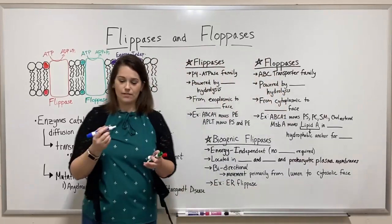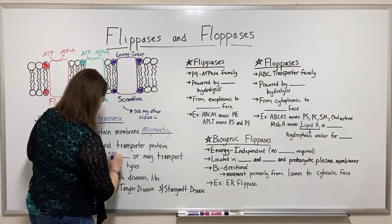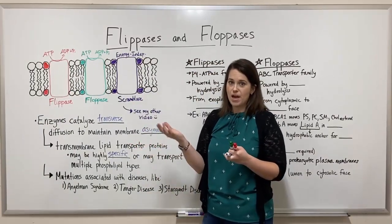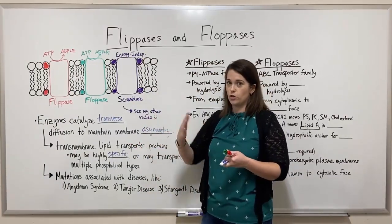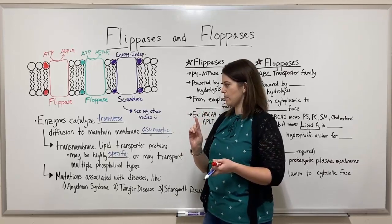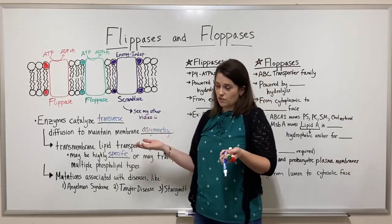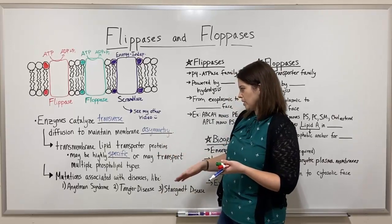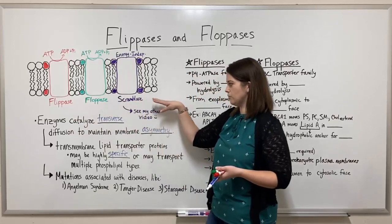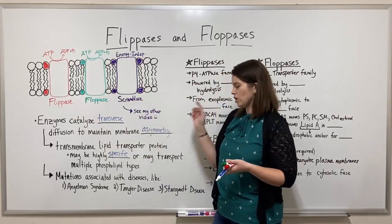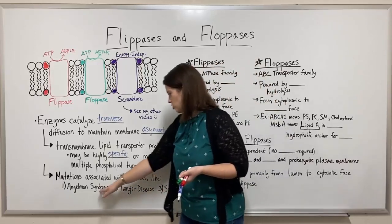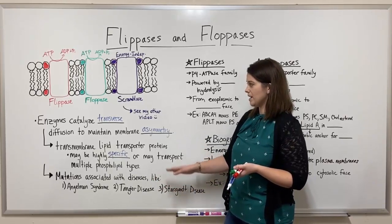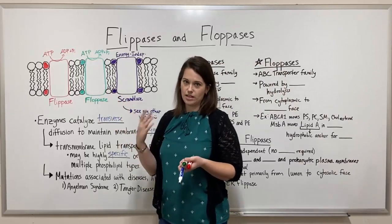These may be highly specific, meaning a given flipase or flopase may only allow the transverse movement of one specific type of phospholipid. Or some flipases and flopases may transport multiple phospholipid types — it just depends on which kind you're looking at. Mutations in these transmembrane lipid transporter proteins are associated with various diseases, including Angelman syndrome, Tangier disease, and Stargardt disease. These are rare but quite consequential, and they cause defects in the activity of these transporter proteins.